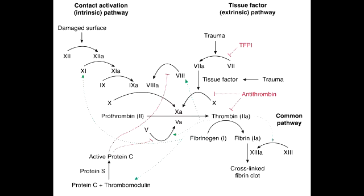So if the Factor V is mutated, then protein C is no longer able to do this, therefore leading to Factor V Leiden. One thing to note about Factor V Leiden is that it's the most common cause of inherited hypercoagulability in whites.